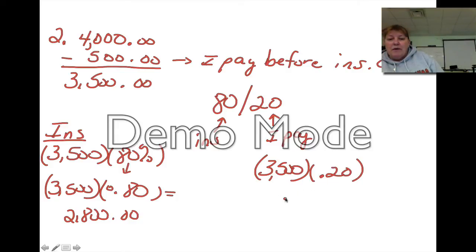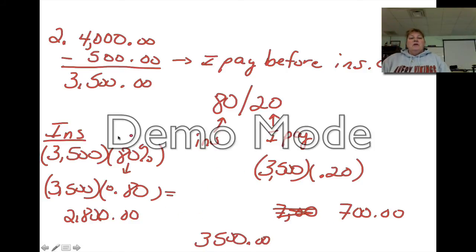And I will pay $7,500. Whoops, whoa. Scratch that out. I will pay $700. Now if I add these two together, boom boom, I get $3,500. So insurance pays 80%, which is $2,800, I pay 20%, which is $700. So there's number two.